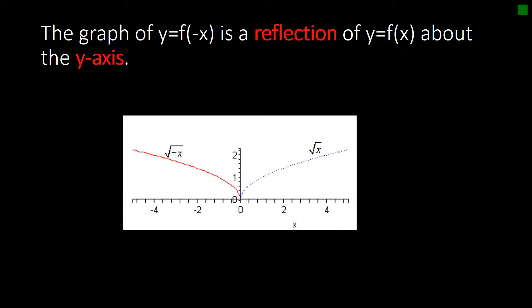We also have a reflection about the y-axis. That occurs if you have a negative x inside of the function. So here this blue graph is the graph of the square root of x. If you have the square root of negative x, it's going to flip across the y-axis and that becomes a reflection about the y-axis.